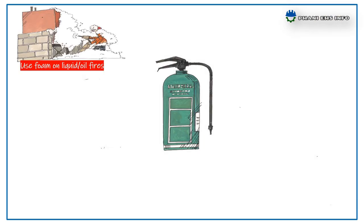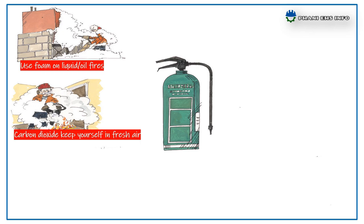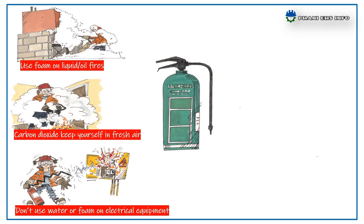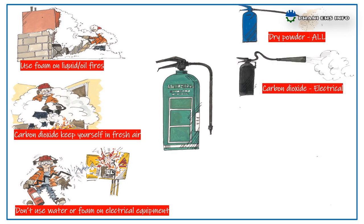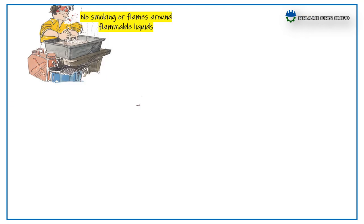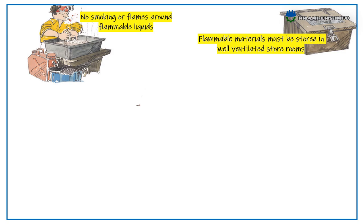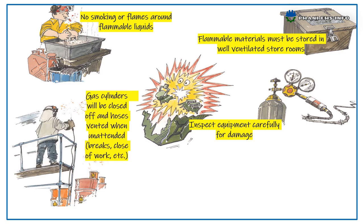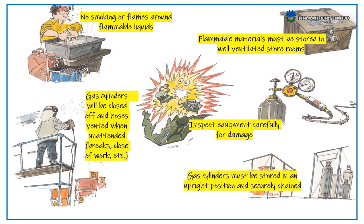Fire safety: Use foam on liquid fires. When using carbon dioxide, keep yourself in fresh air. Do not use water or foam on electrical equipment. Dry powder is for all types of fires; carbon dioxide is for electrical fires; water is for paper and wood fires; foam is for liquid or oil fires. No smoking or flames around flammable liquids. Flammable materials must be stored in well-ventilated areas. Inspect equipment carefully for damages. Gas cylinders must be stored in an upright position and secured with chains. Gas cylinders must be closed off and hoses vented when unattended, such as during breaks or close-up works.